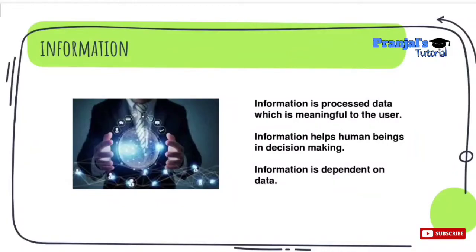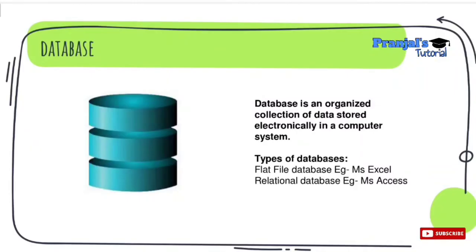Information is dependent on data. We can refine and define data to produce information. So information is dependent on data, but on the other hand, data is not dependent on information.